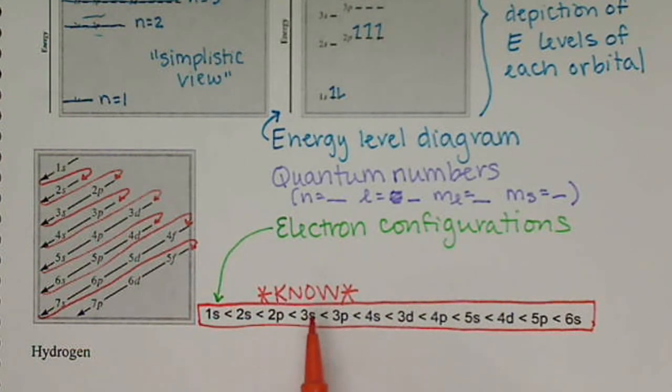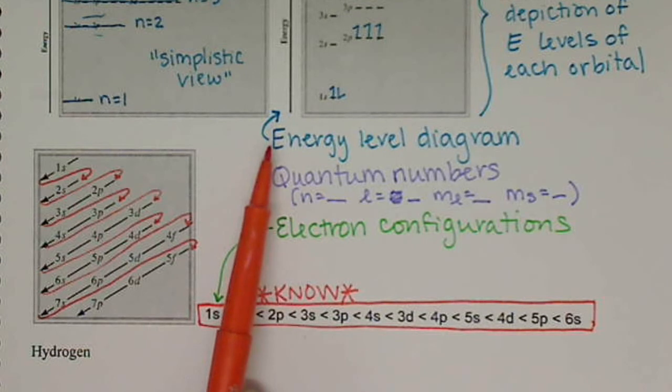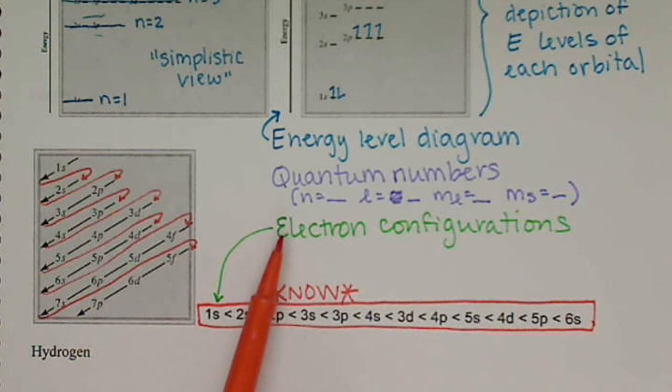So in the next examples, in the next video, we're going to go through writing out our energy level diagrams, the quantum numbers, and the electron configurations for some example elements so we can see how to represent our electrons.